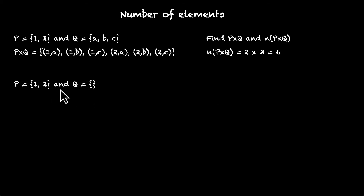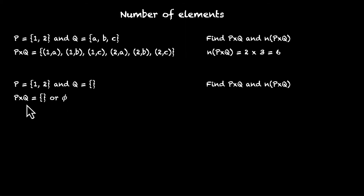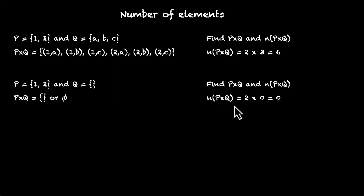Now let's try one more. We have P as {1, 2} and Q is an empty set. Find the Cartesian product and the number of elements. If we try to find the Cartesian product, we are stuck — we can start with 1 but we have nothing to combine it with, there is no second element. So what we end up with is an empty set. P had two elements but Q came up with nothing, so when we wanted to combine both of them, we got nothing. There are no elements for this Cartesian product — 2 times 0 is 0.